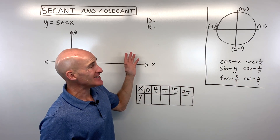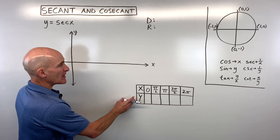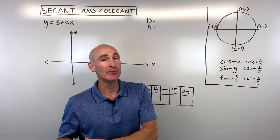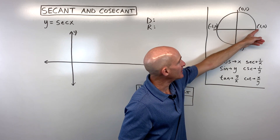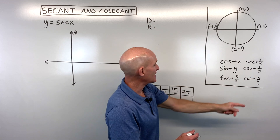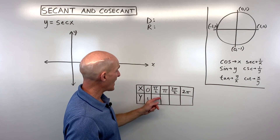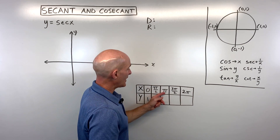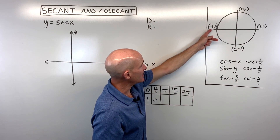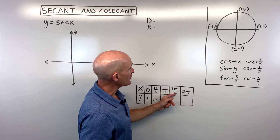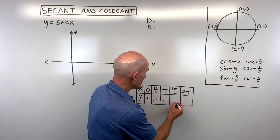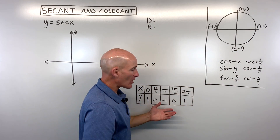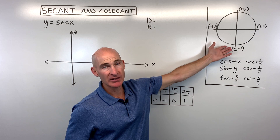When we graph the secant graph, we start by graphing the cosine graph to use as a template. With cosine: at 0° the cosine equals 1; at π/2 the cosine equals 0; at π it equals −1; at 3π/2 it equals 0; and at 2π you're back to 1. You can memorize this table or get it from the unit circle.